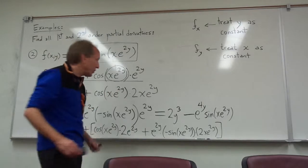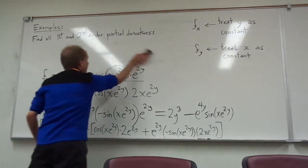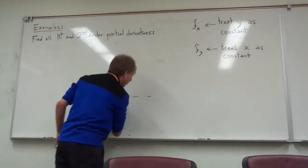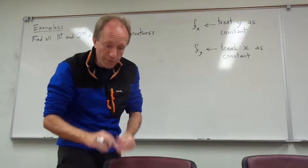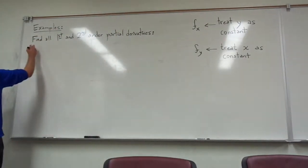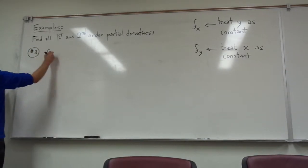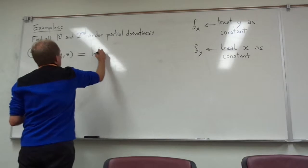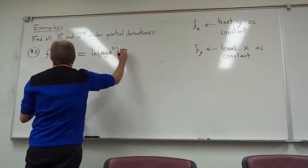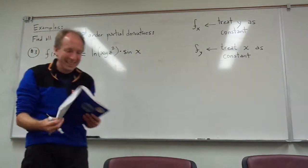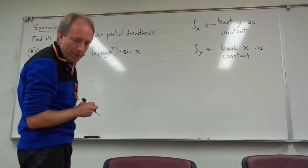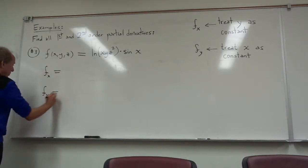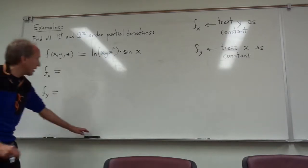I want to give you a little more practice. The function you're looking at might not just involve x and y — it could have more than two variables. Suppose that my function actually depends on x, y, and z. Let's take f(x,y,z) = ln(xyz²) · sin(x). Let's figure out the first-order partial derivatives. This time there's going to be three of them: f sub x, f sub y, and f sub z.